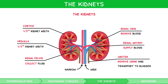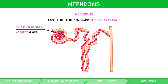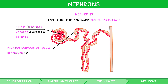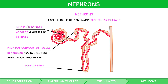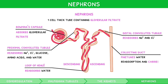The kidneys' role is to filter blood, which occurs within many functional units known as nephrons. A nephron is a one-cell-thick tube containing a fluid created from blood called glomerular filtrate. Each nephron is split into five main sections: the Bowman's capsule, a cup-shaped region with a porous layer to absorb glomerular filtrate; the proximal convoluted tubule, which reabsorbs sodium, chloride ions, glucose, amino acids, and water; the loop of Henle, which reabsorbs water by carrying glomerular filtrate from the cortex into the medulla down a descending limb and back out to the cortex in an ascending limb; the distal convoluted tubule, which also reabsorbs sodium and chloride ions; and the collecting duct, which fine-tunes water reabsorption and carries filtrate through the medulla to the renal pelvis.